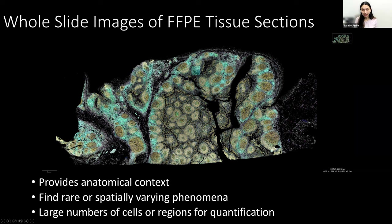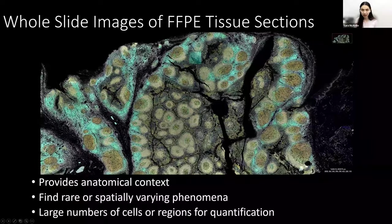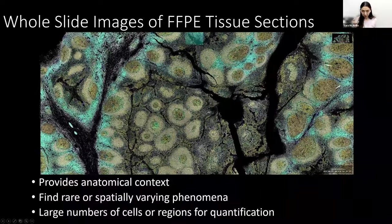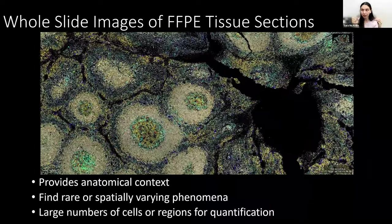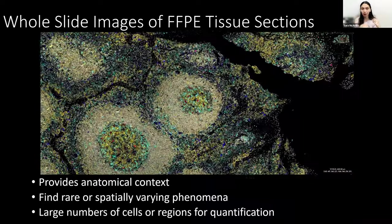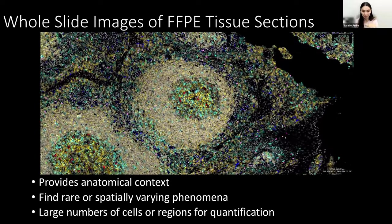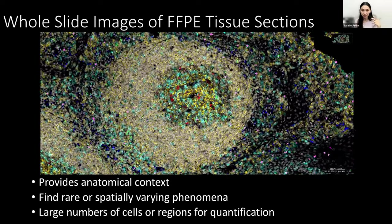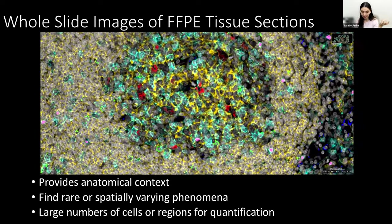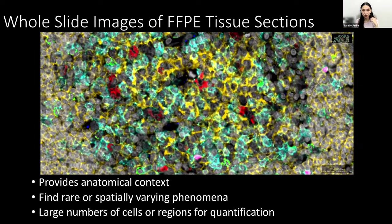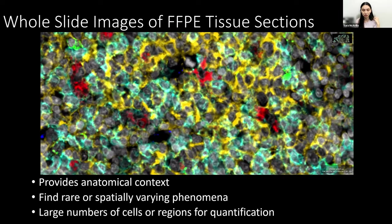Everything I'm about to say about analysis works on any sort of multiplexing instrument, whether it's a cyclical staining or a mass cytometry-based machine. One of the things we really like about the Orion is that it does whole slide images. Starting with the entire anatomical context of the whole organ, you can then zoom in and in until you are phenotyping individual cells. Having this anatomical context is essential for finding either rare or spatially varying phenomena, and it's also really helpful for getting enough cells for true statistical quantification.